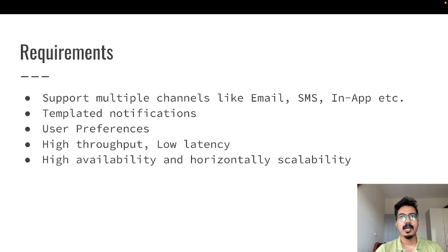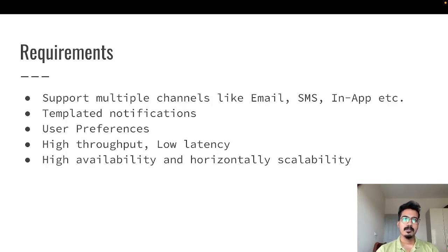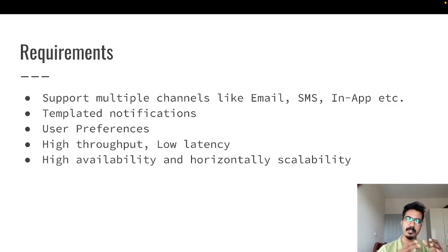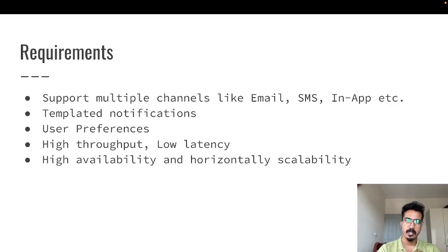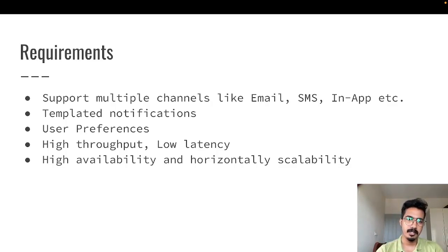Two important non-functional requirements: first, high throughput and low latency. As the number of users in your app scales, notification triggers will obviously increase, and this shouldn't slow down your notification delivery pipeline. In social networks especially, you might be triggering thousands or hundreds of thousands of notifications. If your notification throughput is low, latency will be high. For example, if a thousand notifications get pushed into the message broker or queue, your system must ensure all thousand are processed and delivered in a timely manner.